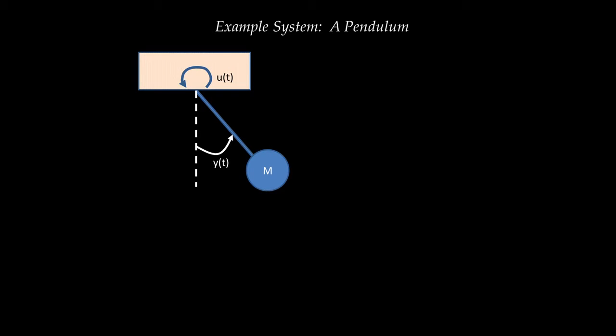Recall from the previous tutorial that there are five steps to developing a state-space representation of a dynamic system. The first step is to identify the input — in this case, it is the torque acting on the pendulum, U of T. The second step is to identify the output — in this case, it is the angle between the pendulum and the vertical, Y of T.